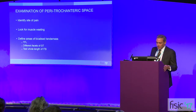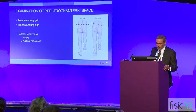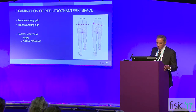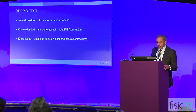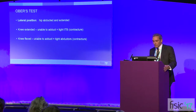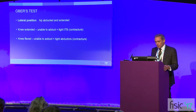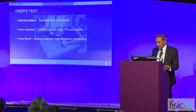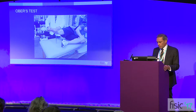We've already heard about the examination of this part of the hip, so I won't dwell too much on this. The Trendelenburg gait and Trendelenburg sign are important things to look out for, as well as testing for active and against-resistance weakness. The Ober's test is another useful test, done in a lateral position. With the knee extended it really points to tightness of the ITB itself, whereas with the knee flexed it points more to a contracture of the abductors.